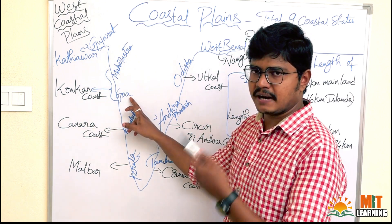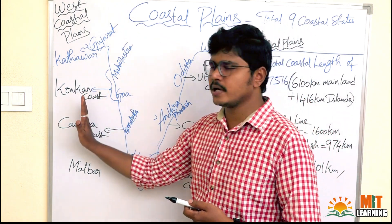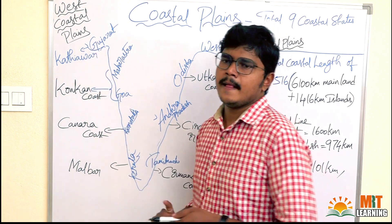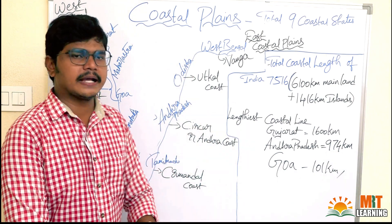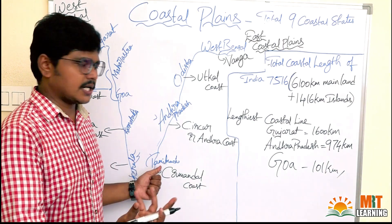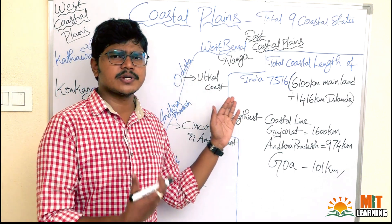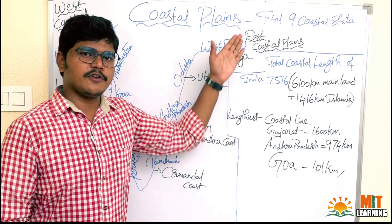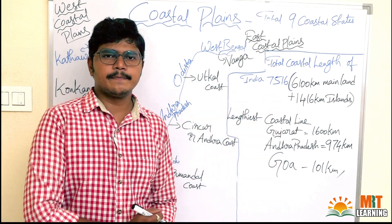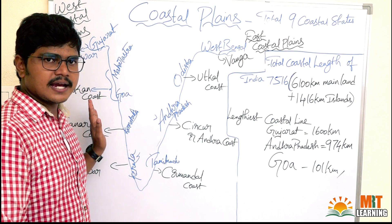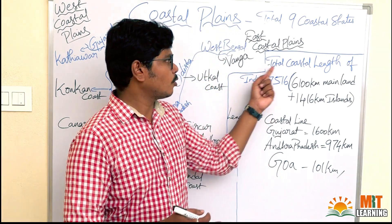Goa (Panaji), Karnataka (Bangalore), and Kerala (Thiruvananthapuram) — these five states share boundary with the Arabian Sea on the west side. On the east side, four states share boundary with the Bay of Bengal: Tamil Nadu (Chennai), Andhra Pradesh (Amaravati), Odisha (Bhubaneswar), and West Bengal (Kolkata). So total nine coastal states — five on the west and four on the east.